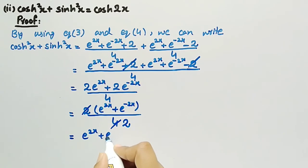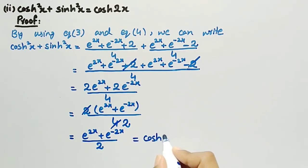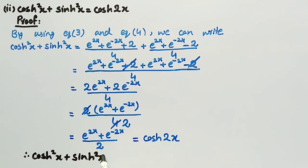We are left with (e^(2x) plus e^(−2x)) divided by 2, which is equal to cosh(2x). So we have proved that cosh²(x) plus sinh²(x) is equal to cosh(2x), and this was the proof of the second identity.